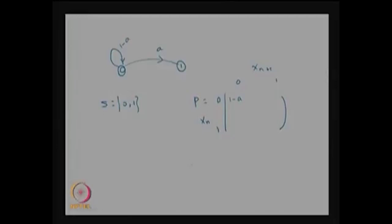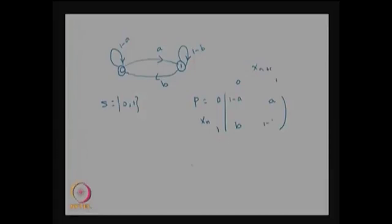That means if at stage n the transmitted digit was 0, then at stage n+1 the transmitted digit will be 1 with probability a. Similarly, the one step transition probability from 1 to 1 is 1-b, and from 1 to 0 is b.